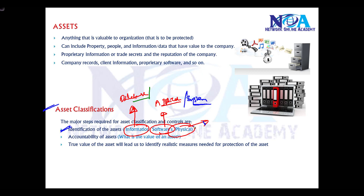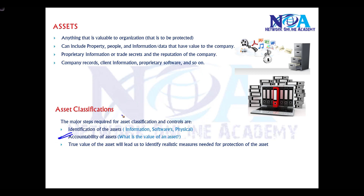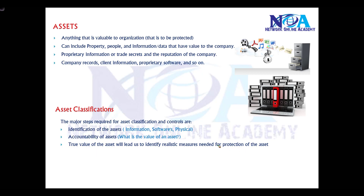The next thing is to identify the accountability of the asset. Accountability is essentially the value of that particular asset. You need to figure out the actual value of the asset because, when implementing security, depending upon the value of the asset you need to take measures to protect it. If it is a more valuable asset, you would apply more security in the network.